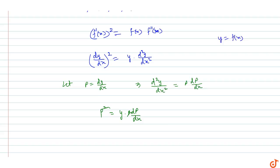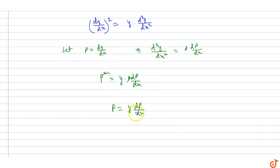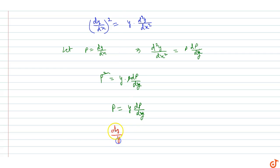So p² = y · dp/dx. Rearranging, we get p = y · dp/dx, which gives dp/dy with respect to y. This simplifies to dp/p = dy/y.